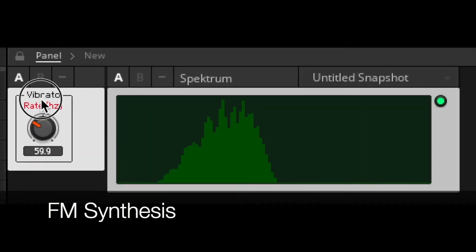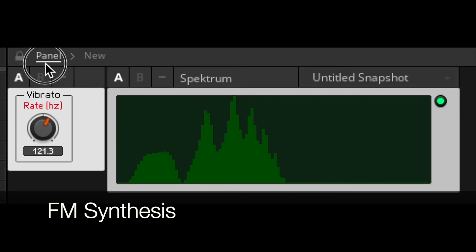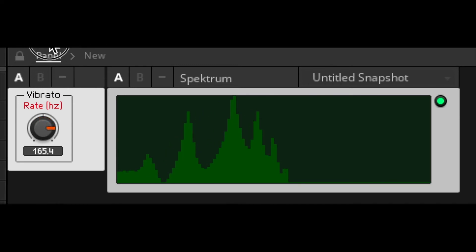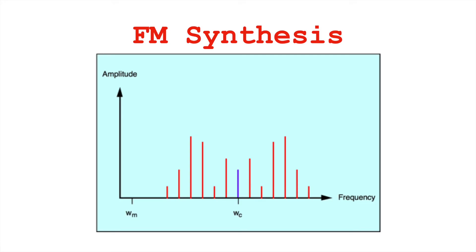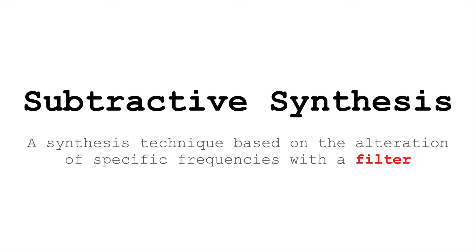Frequency modulation synthesis is similar, but what's interesting about FM synthesis is that sidebands develop their own sidebands, and then those sidebands develop their own sidebands. So with just two simple sine waves, you can create very sophisticated timbres made up of a lot of different frequency components. Creating sound this way is very efficient and cheap — unlike subtractive synthesis, there's no need for a filter if you can just create the spectrum you want from the start.